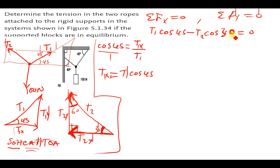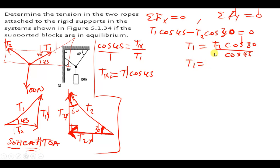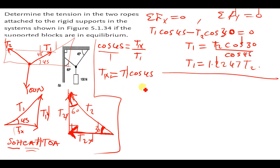These are the only x components we have, and the sum equals zero. Making T1 the subject: T1 = T2 cos 30 divided by cos 45, which equals approximately 1.2247, so T1 = 1.2247 · T2.